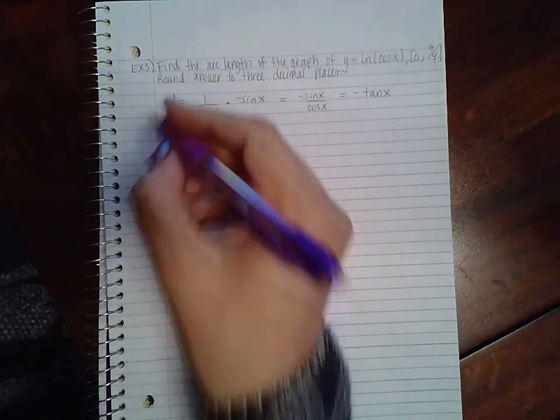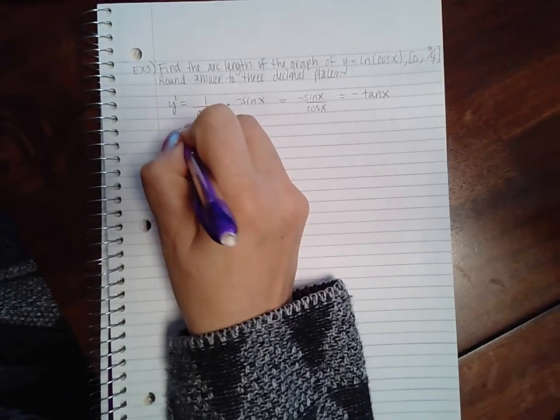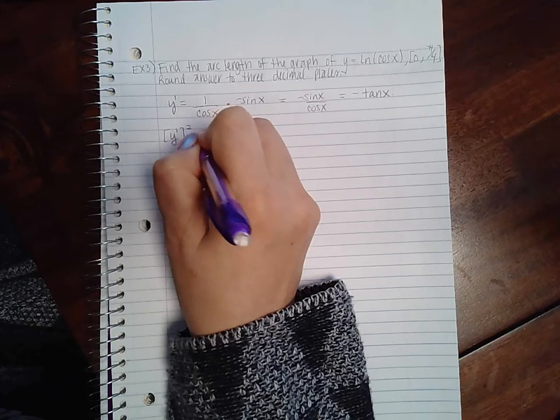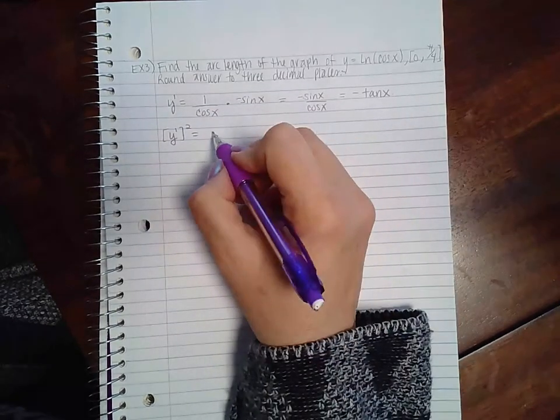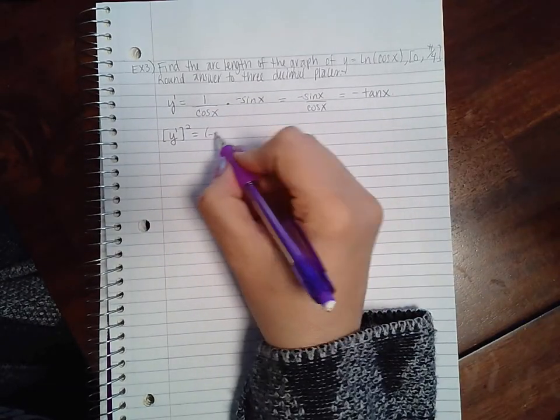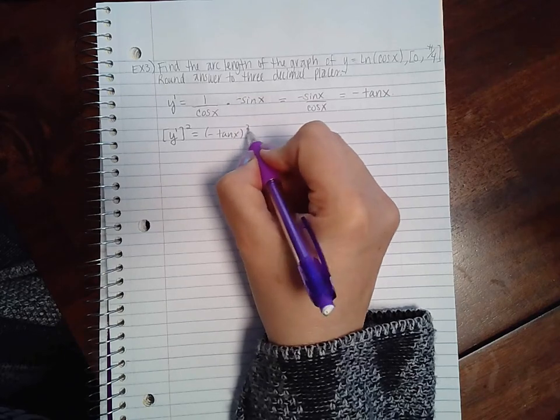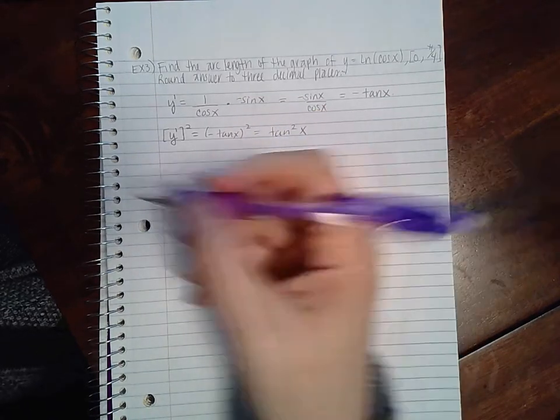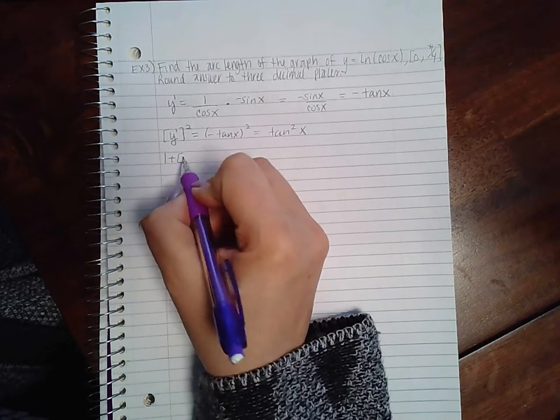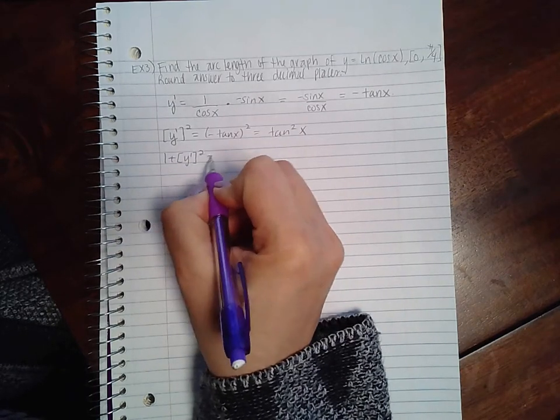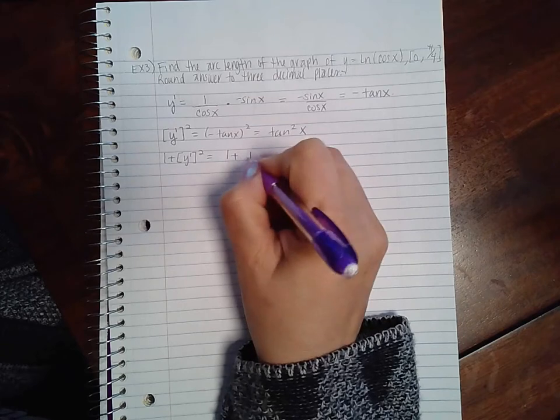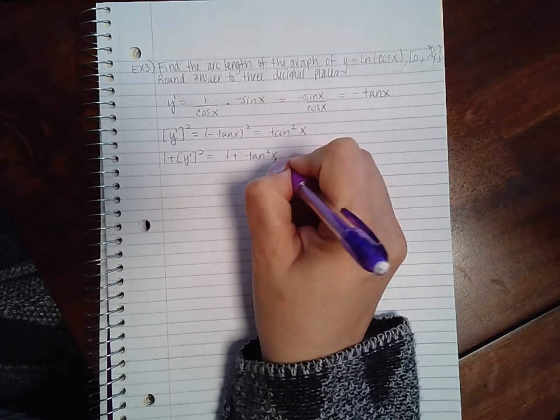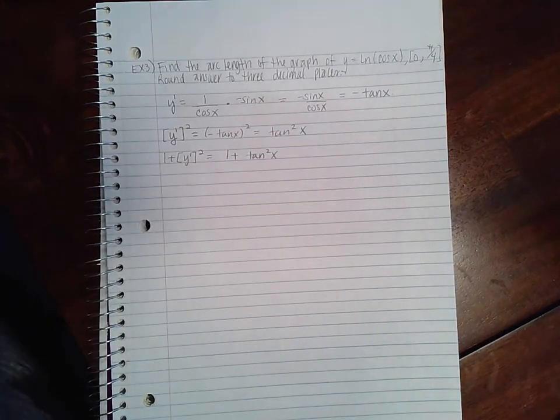Now we do have to square y prime and eventually add 1. So if I square negative tan(x) you end up with just tan²(x) and if I add 1 we get 1 + tan²(x).